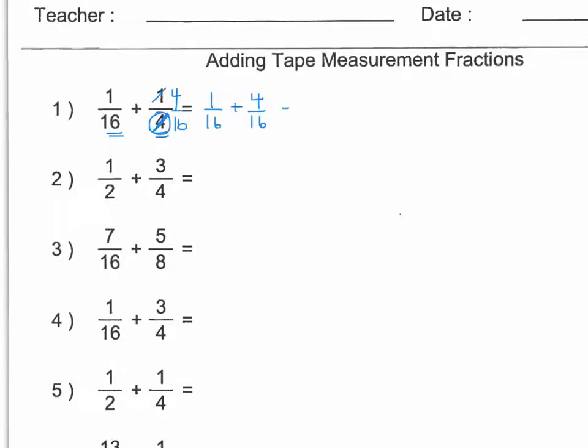So all together, if you have 1 sixteenth and you add another 4 sixteenths, you would have 5 sixteenths. Now if we look up on our chart, we know that 5 sixteenths is as low as we can go. We can't make that into a simpler form.